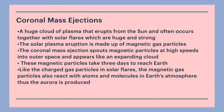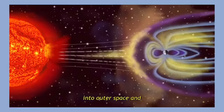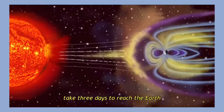The solar plasma eruption is made up of magnetic gas particles, and the coronal mass ejection spouts magnetic particles at high speed into outer space and appears like an expanding cloud. These magnetic particles take 3 days to reach Earth.